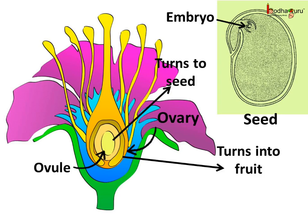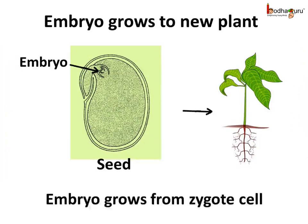Now let us see what exactly happens after pollination. After pollination, the ovary swells up, turns into the fruit, and the ovule inside the ovary turns into the seed. The new plant develops from the embryo inside the seed. This embryo develops from a single cell called the zygote. The zygote develops into the embryo, then the embryo develops into the baby plant. So it all starts from a single cell zygote.